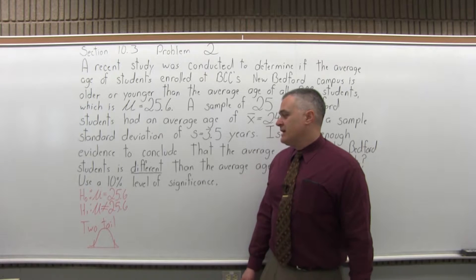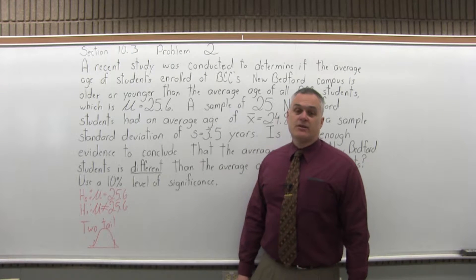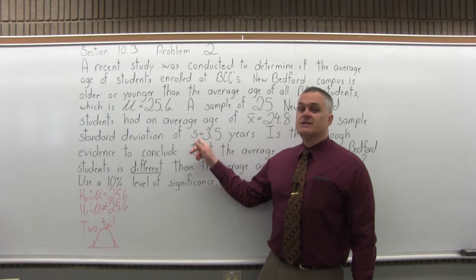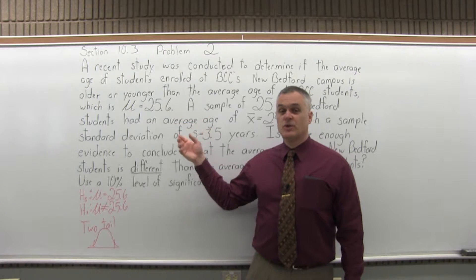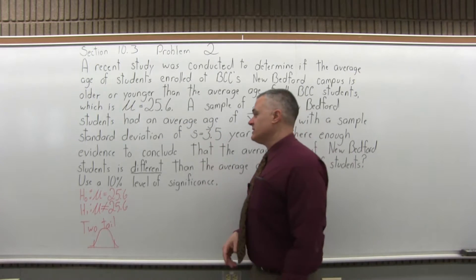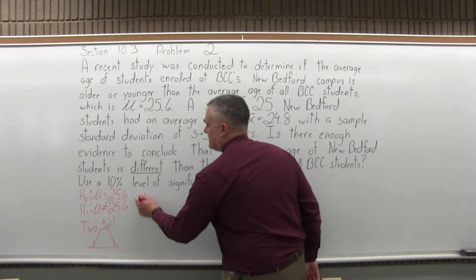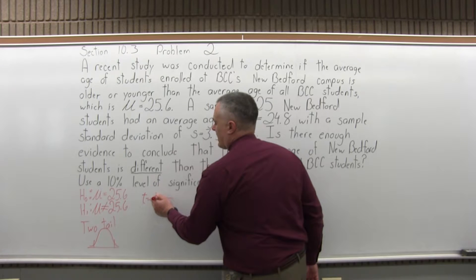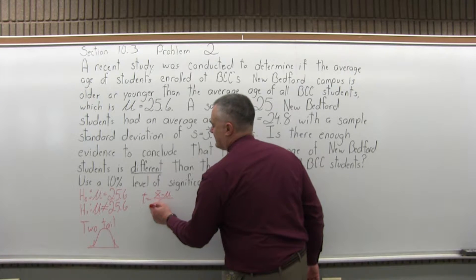So the next step, step four, is calculate t. So again, we're doing t because we have to use the sample standard deviation. If we knew the population standard deviation, we would calculate z. Similar process, but a little bit of a difference. So t is x̄ minus μ over s divided by square root of n. So we'll go ahead and fill in that formula.